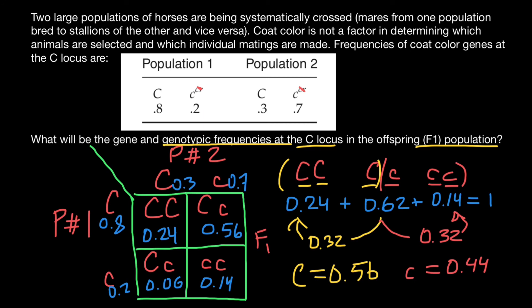When we add the frequencies of these two alleles — dominant and recessive — we get one. We have answered both questions: the frequency of the alleles (dominant and recessive) in the F1 generation, and the frequencies of the three genotypes in the F1 generation.